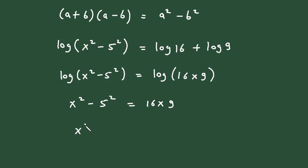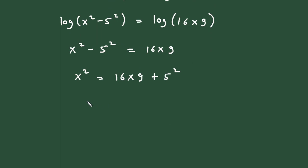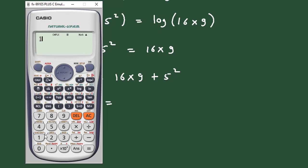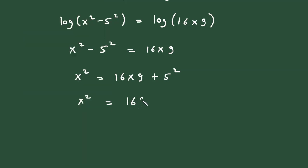Now x² is equal to 16 × 9. If we take this on right side, so this will be plus, so plus 5² is 25, so we can write 5² only. Now x² is equal to, let's solve this in calculator directly, 16 × 9 + 5², it is 169.